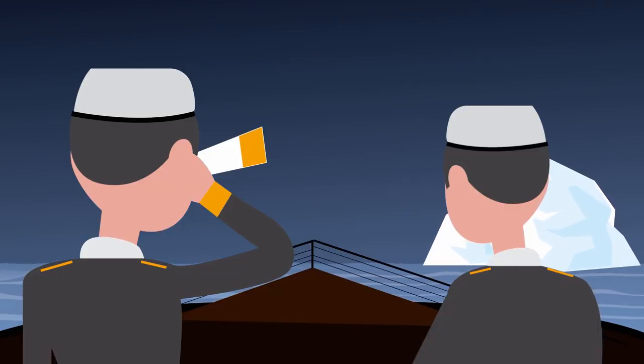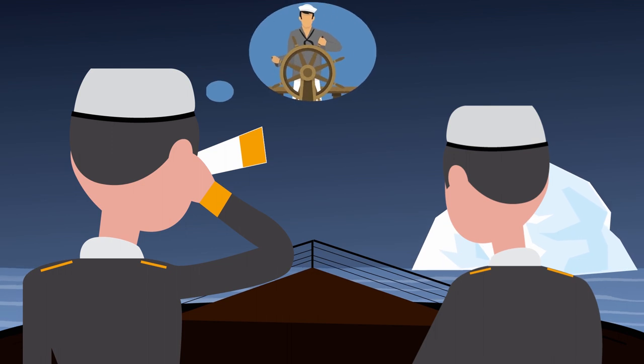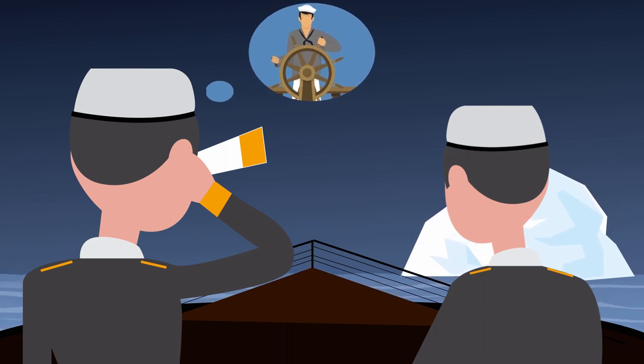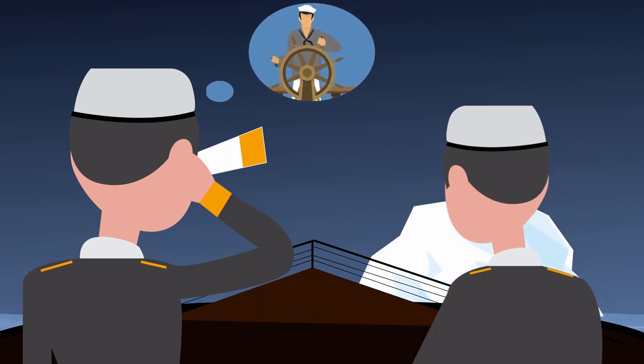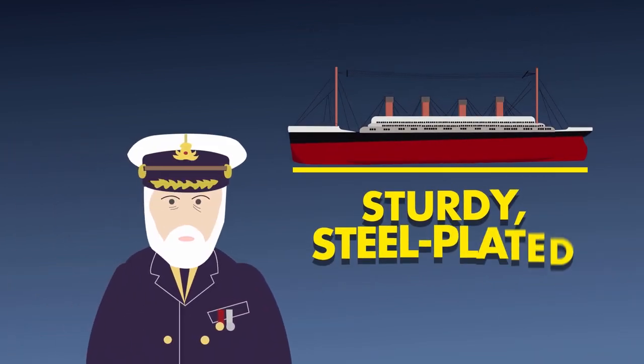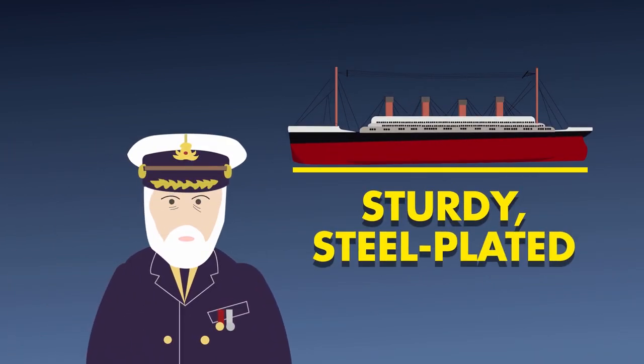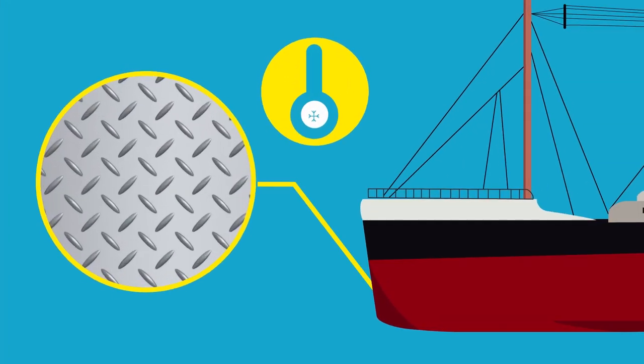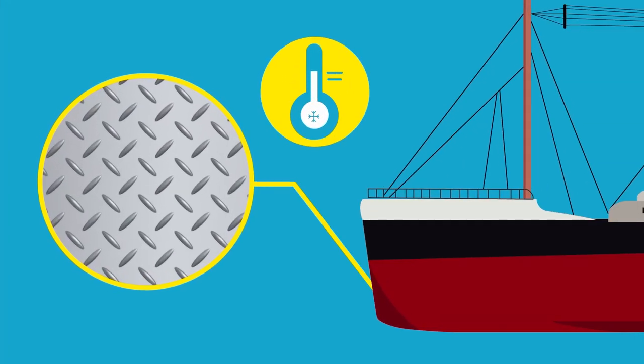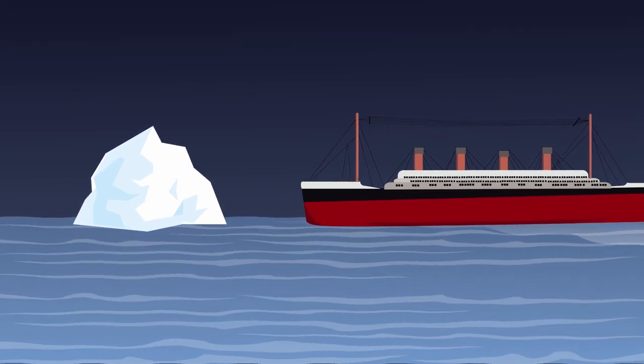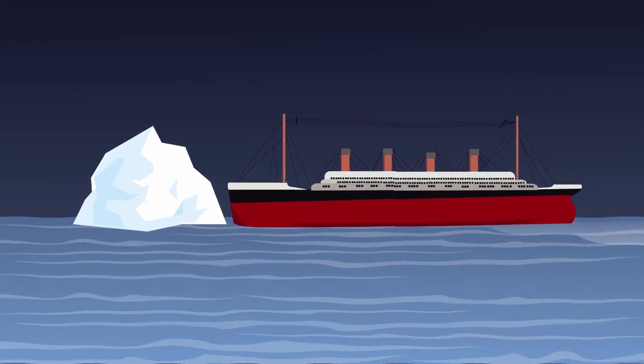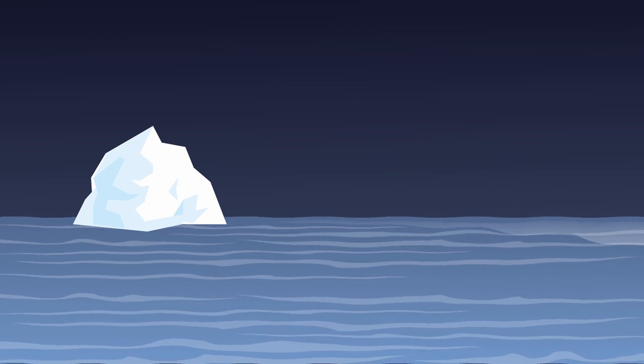It was only once the crew's watchmen noticed the iceberg themselves that they thought, hey, let's not try crashing into this, but somehow they still did. Maybe the captain was sure that the sturdy steel-plated Titanic could take any blow sent its way. Unfortunately, the ship was made out of a type of steel that becomes extremely brittle in the cold and cracks easily when hit. Not the best metal for sailing through frigid water and preventing wild iceberg attacks.